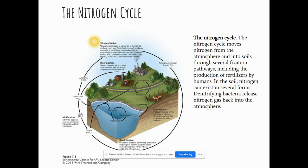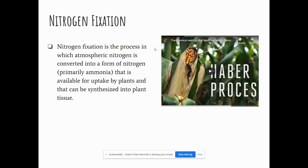Here is another image of the nitrogen cycle, actually from your textbook — you can look at Module 7 more closely for extra review. Nitrogen fixation is the process in which atmospheric nitrogen is converted into a form of nitrogen, primarily ammonia, that is available for uptake by plants and can be synthesized into plant tissue. There is a helpful video about nitrogen fixation and how it allows us to grow food — a link to this slideshow will be posted, and I recommend you take a look since the nitrogen cycle can be one of the more complex of the four biogeochemical cycles.